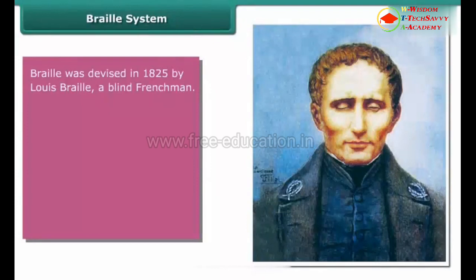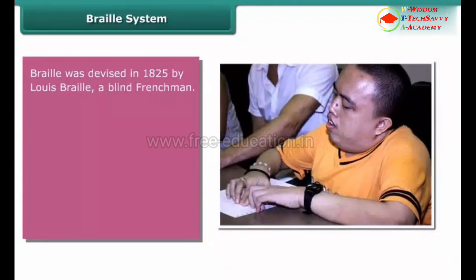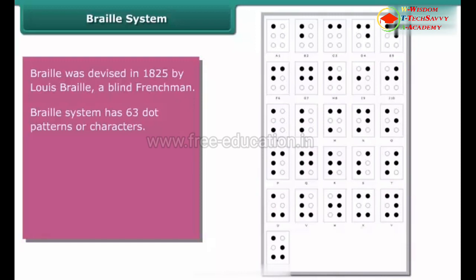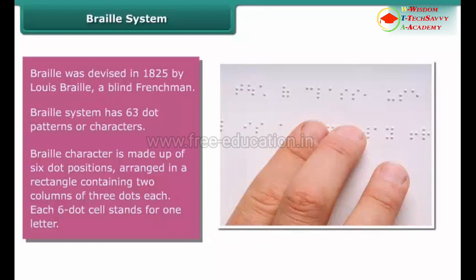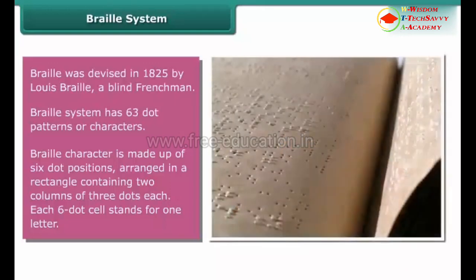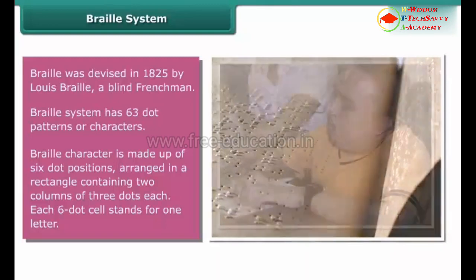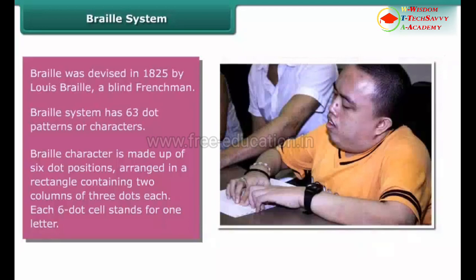Braille was devised in 1825 by Louis Braille, a blind French man. Braille is a writing system which enables blind and partially sighted people to read and write through touch. The Braille system has 63 dot patterns or characters. Each Braille character is made up of six dot positions arranged in a rectangle containing two columns of three dots each. Each six-dot cell stands for one letter, a combination of letters, a common word, or a grammatical sign. Visually challenged people learn Braille by beginning with letters, then special characters and letter combinations.